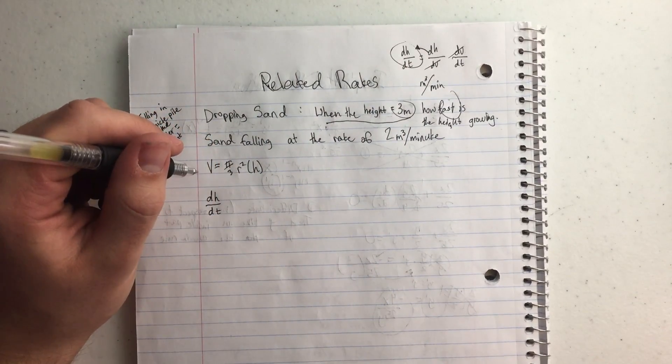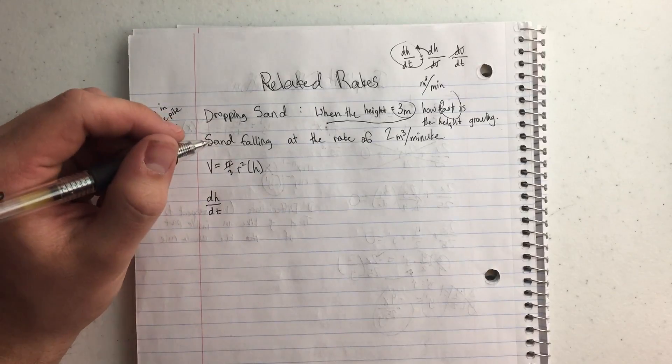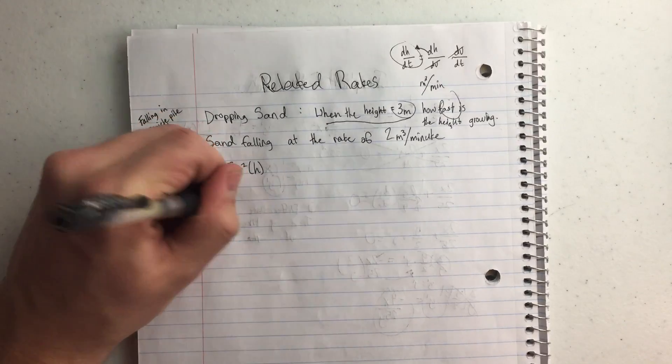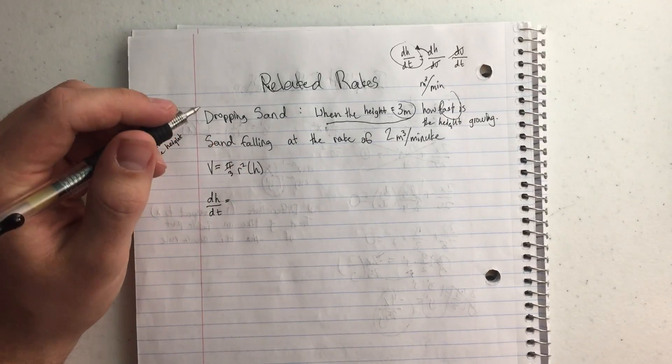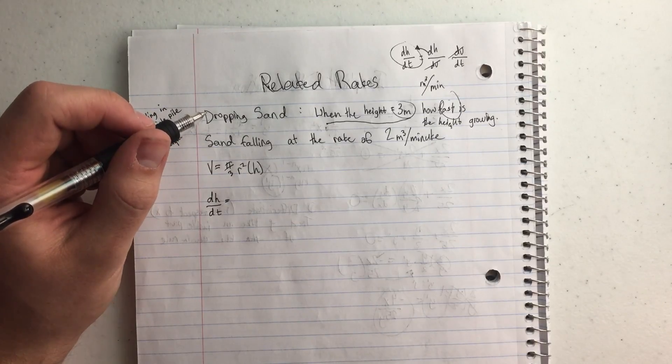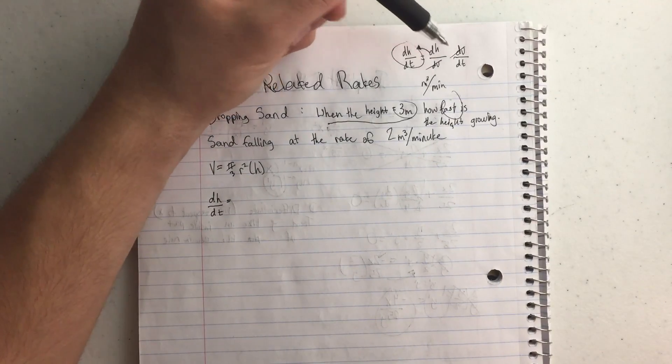But to get this I don't have a dh over dt equation, so what I'm going to have to do is set that equal. I do have, I can get, I do have the dv over dt.